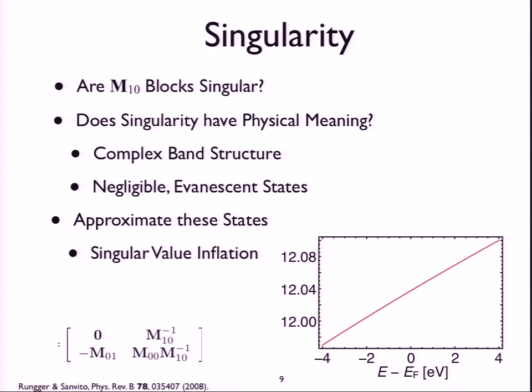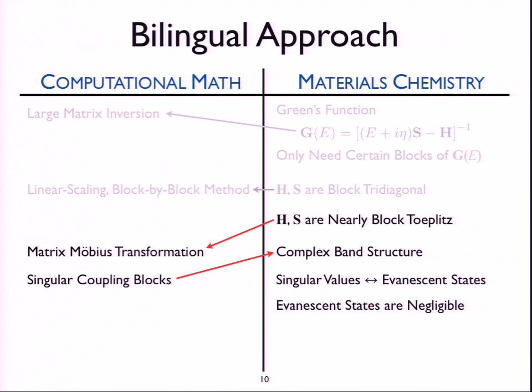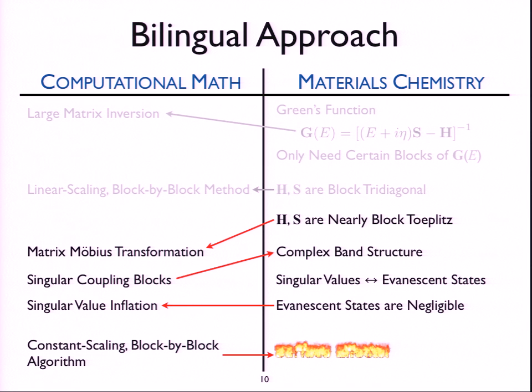And so with that, just to summarize, we can use the block-toeplitz structure to plug it into a matrix-Mobius transformation. Unfortunately, we have singular coupling blocks. We can get around that using singular value inflation, which then lets us use the matrix-Mobius transformation, which gives us this constant scaling block-by-block algorithm. It does not matter how many layers we put in the material, it will cost the same amount, which I thought was really cool. I hope you do too. And then once we have that, we can finally get at the surface effects that we've been wanting to explore.